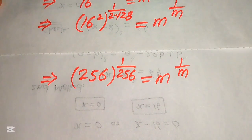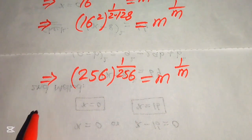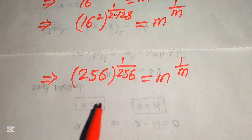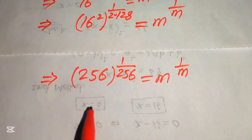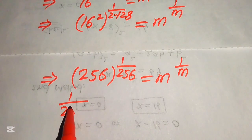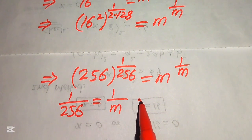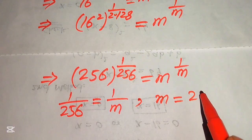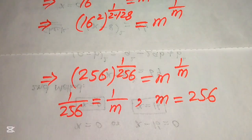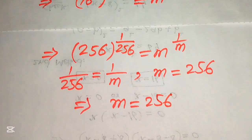Now both sides have the exponent as the reciprocal of its base. Comparing the exponents: 1 over 256 equals 1 over m, and comparing the bases: m equals 256. From both cases we get the same value, so m equals 256.